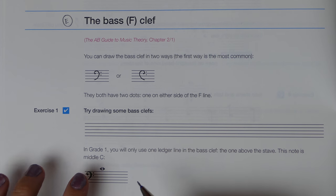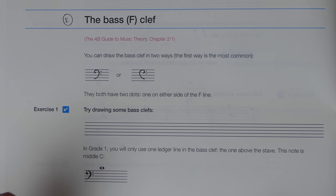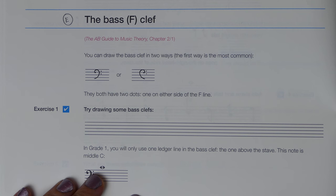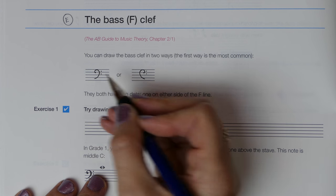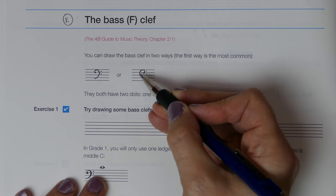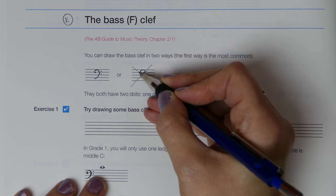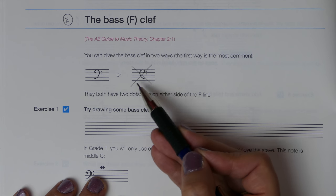The bass clef is the clef used to represent the lower register of notes — the bass, low register. So that will be for instruments such as the bass guitar, the bassoon, the tuba, or any of those low instruments. It's sometimes called or referred to as the F clef because it begins on that second line down, which is note F. It can also be written in a backwards, reverse way, though that's not common usage.